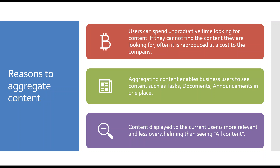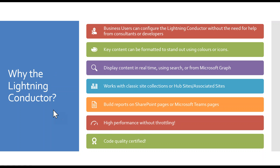Aggregating content helps business users find what they're looking for, see it all in one place, and refine it to the current user so they see content relevant to them as an individual. The Lightning Conductor is really simple to use — business users can configure it without needing developers or consultants. But it also has the ability to take it further: if you want something very specific, you can step away from the grid view and build display templates with JSON and so on to create a completely different view specific to your needs.